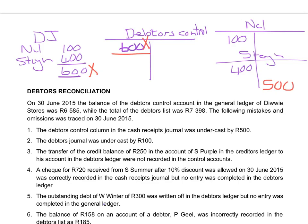If there is a mistake in the individual account of a debtor — such as posting the wrong amount, putting it in the wrong person's account, or on the wrong side — it will only be corrected in the debtors ledger. Any mistake in the journals will be corrected in both the control account and the debtors ledger, because a journal mistake makes both the column total and the individual posting incorrect. So before starting the debtors reconciliation, decide: must the error be corrected in the debtors control, in the debtors ledger, or in both?